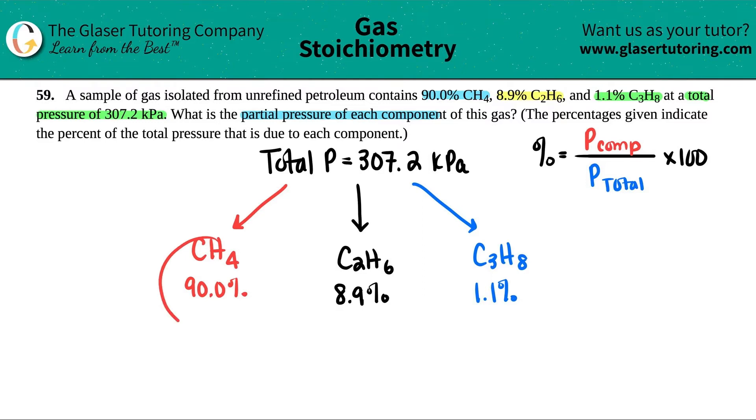Now in this case, they gave us the percentages for each one, and they gave us the total pressure. So all we have to do is basically just find out that pressure of the compound, and that's the partial pressure. The partial pressure is just saying the pressure of a specific compound. So let's set up these equations.